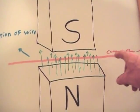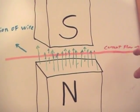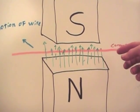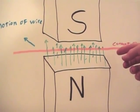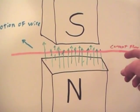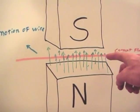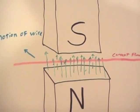When it moves one way, the current flows in one direction, and when it moves the other way, it flows the opposite direction. So as it moves back and forth very quickly, it creates an alternating current at whatever frequency the guitar string is vibrating at.